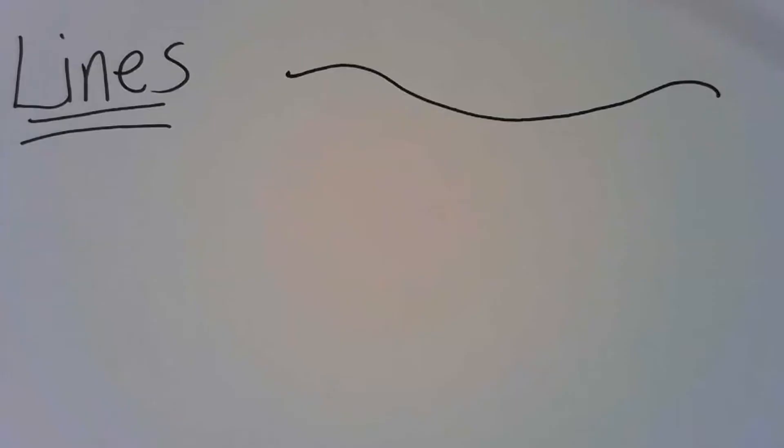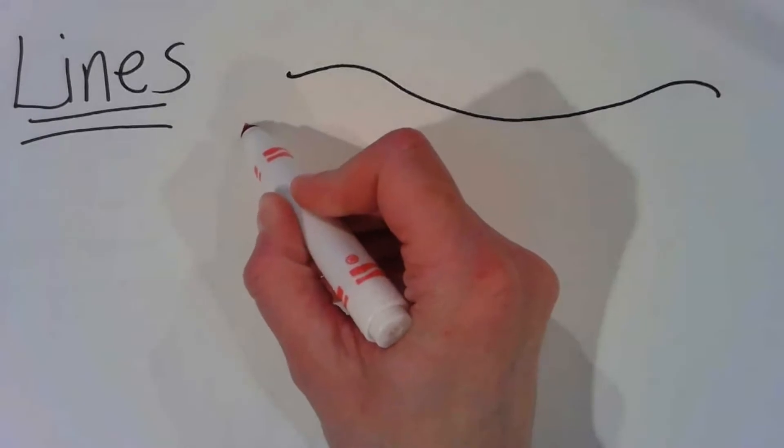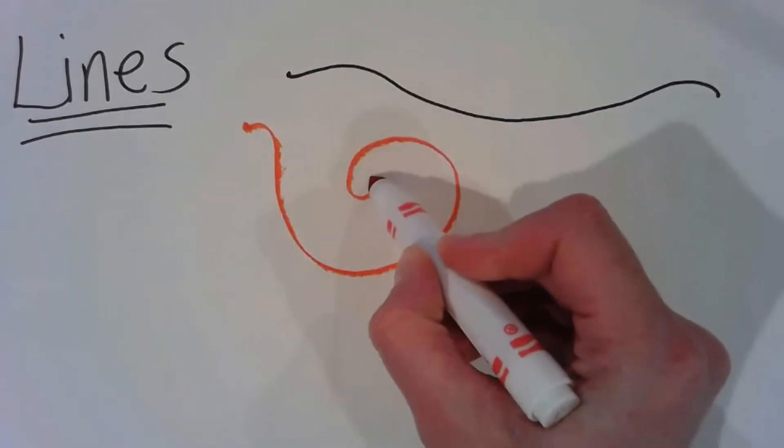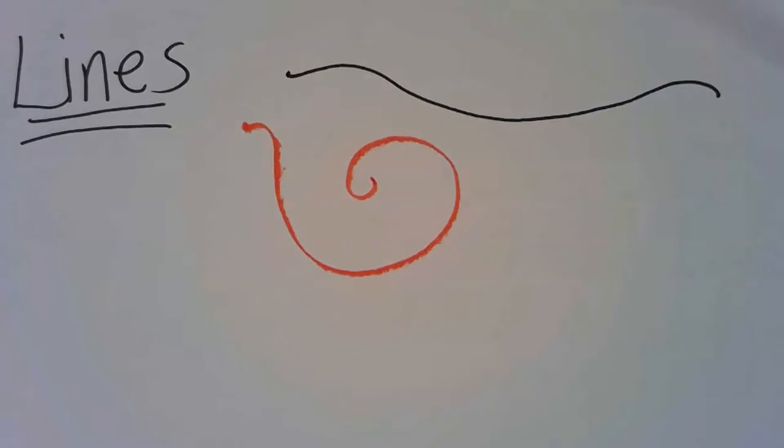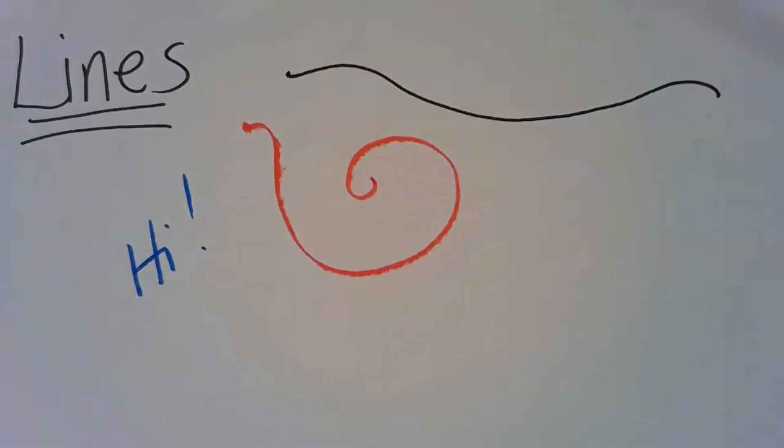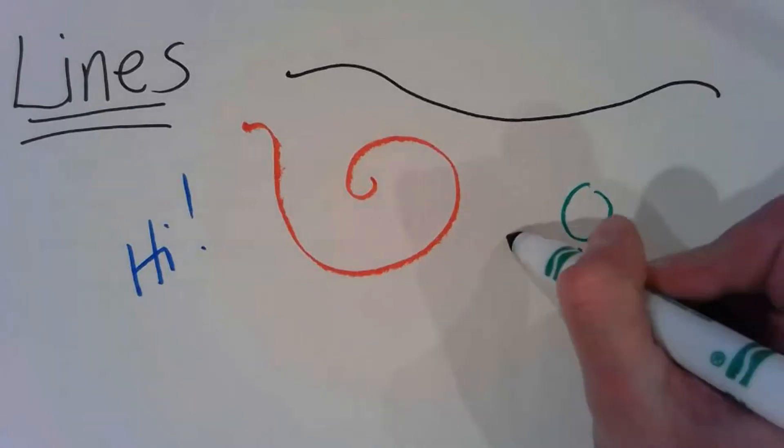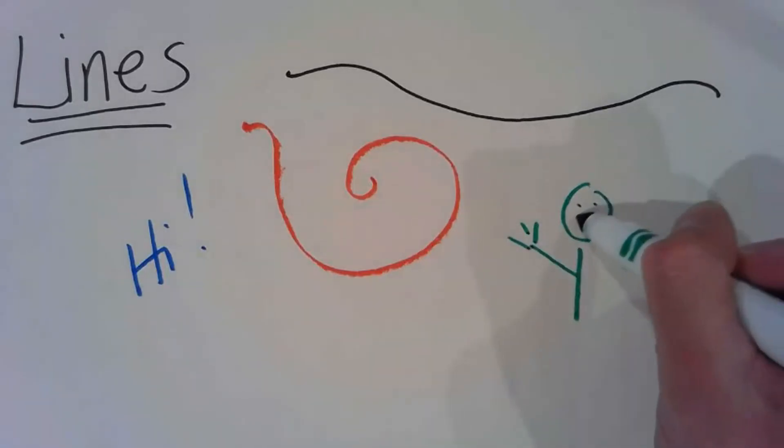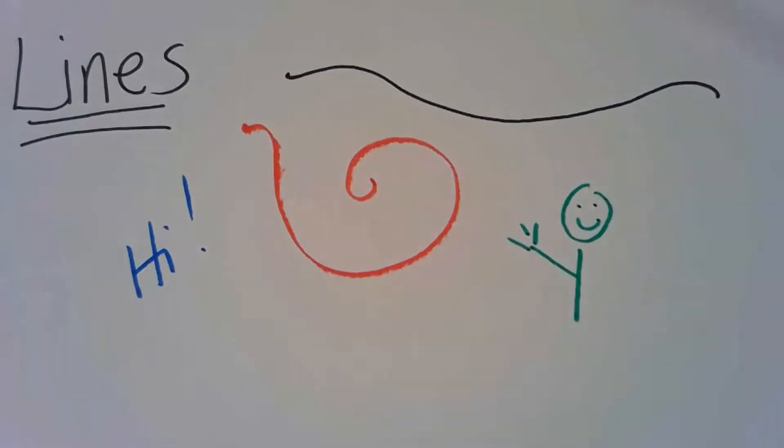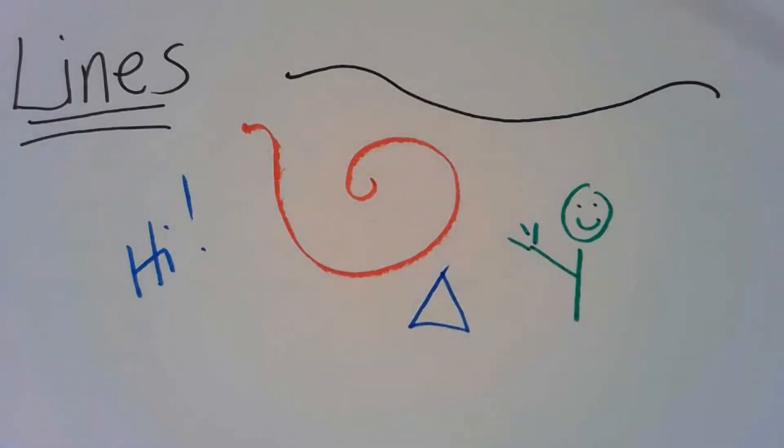Today we're going to be working with line. A line is a continuous mark. We have many different types of lines and we can use lines to write, we can use lines to draw, we can use lines to make a shape, and we can use lines to make art.